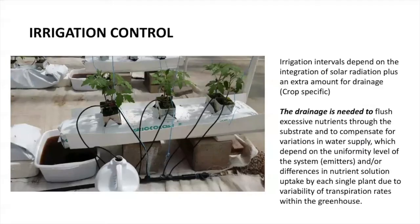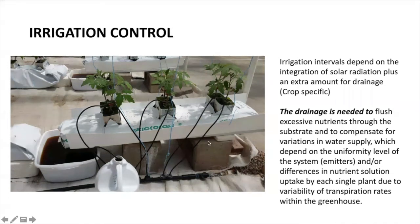Here we have an example of a drip irrigation system with emitters and drainage. This is a very small system that we usually use for tests inside of greenhouses. We usually need to target 20 to 30% of drainage. This will help you to flush the system and sometimes also help you to avoid the retention of salts in the substrate. The percentage is usually crop specific, so 20 to 30% is a very common number, but you can check the percentage recommended for a specific crop.